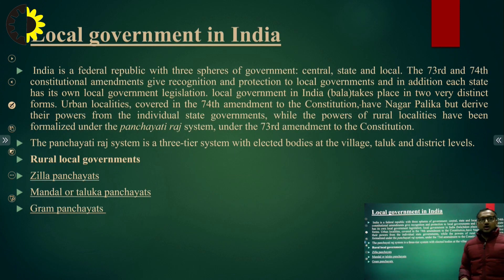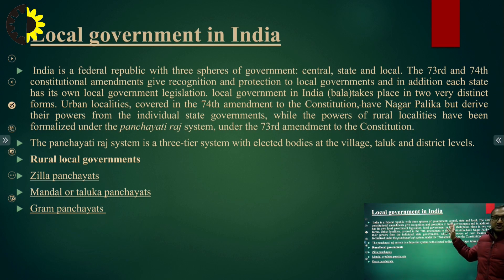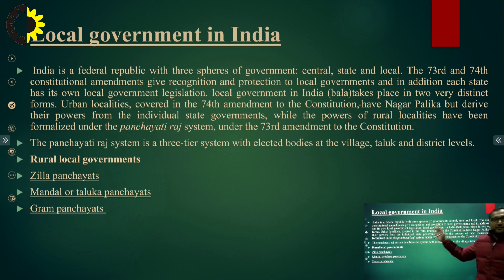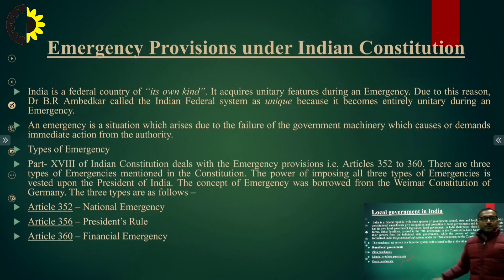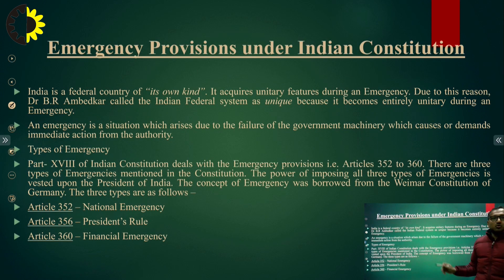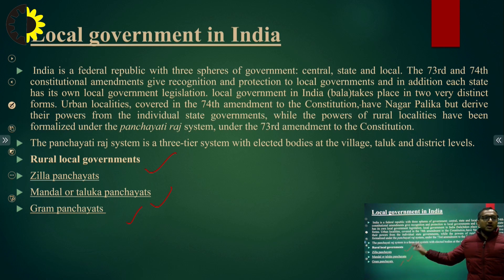India is a federal republic with three spheres of government: central, state, and local. The 73rd and 74th constitutional amendments give recognition and protection to local governments. The local rural governments include the Zilla Panchayat, Mandal or Taluka Panchayat, and Gram Panchayat. These are the local governments in India and they have independence in their own domain.